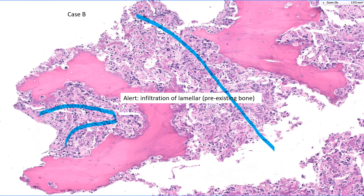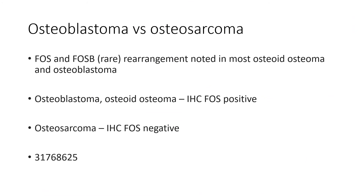Infiltration of pre-existing bone is a defining feature of osteosarcoma, and this is a lovely example of an osteoblastoma-like osteosarcoma. Can you use ancillary testing to make this distinction? Most osteoblastomas and osteoid osteomas have a rearrangement of the gene FOS, more rarely FOS-B. You can exploit that with immunohistochemistry: most osteoblastomas show immunohistochemical reactivity for FOS or FOS-B, while osteosarcomas are typically negative for FOS. We do use this antibody in challenging cases.